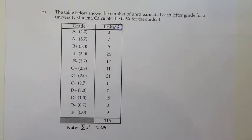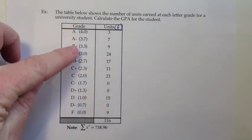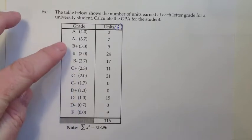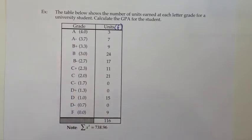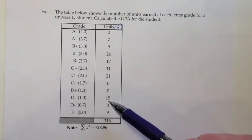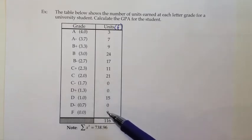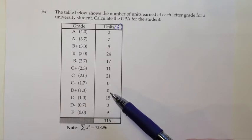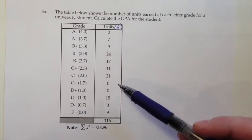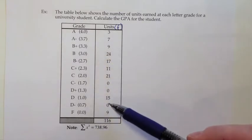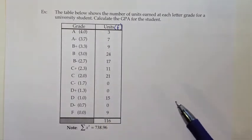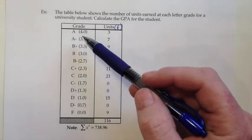So the table below shows the number of units earned at each letter grade for a university student. Calculate the GPA for the student. So I'm going to want to enter this data in both the number of grade points that you earn for the letter grade that you get and then also the number of units to weight that because if you get an A in a statistics class which is 4 units and you get a C in your PE class which is typically 1 unit those don't balance out to the B. If the stat class is 4 units it counts 4 times as much so we want to make sure we weight that with the units.